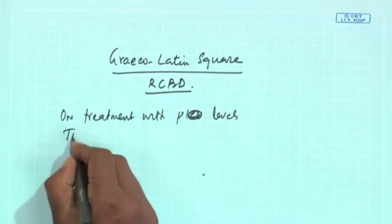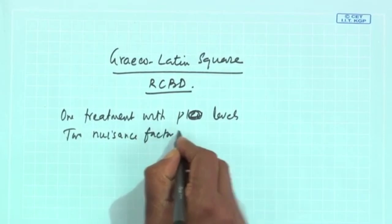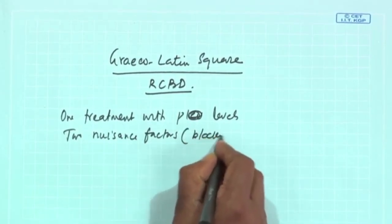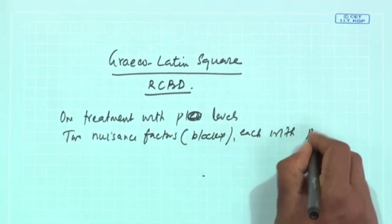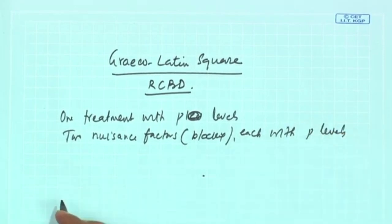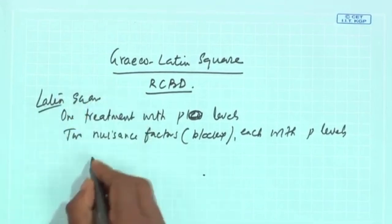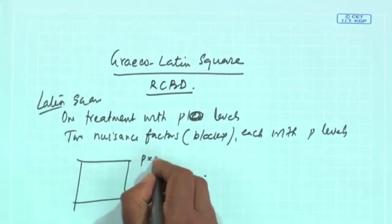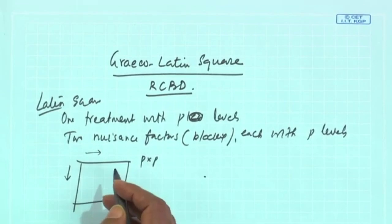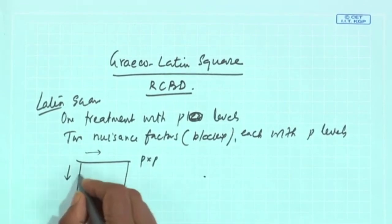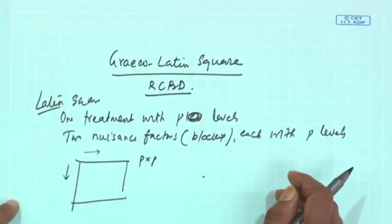In Latin Square, you have two nuisance factors — also called blocking factors — each with P levels. You form a P×P square where rows represent one blocking factor, columns represent another blocking factor, and each individual cell is assigned to a treatment.